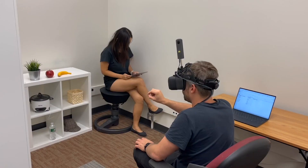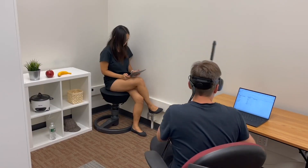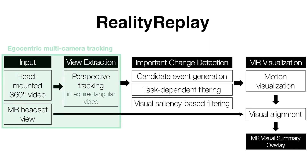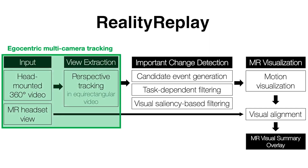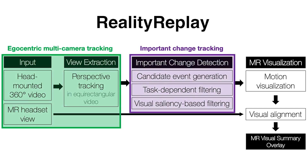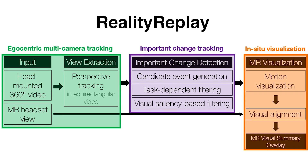The user can browse through the playback using a time slider and also choose specific objects for the playback. Reality Replay takes a novel user-centric sensing approach, combining semantic segmentation and saliency prediction to detect important changes, and visualizes the changes in-situ through mixed reality overlays.